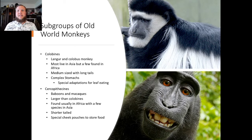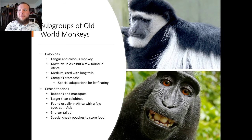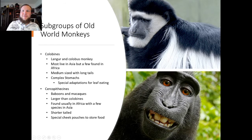Old World monkeys can be divided into colobines and cercopithecines. Colobines are the langur and colobus monkeys — mostly living in Asia, with a few in Africa. They're medium-sized with long tails and have complex stomachs, a special adaptation for leaf-eating. Cercopithecines are mostly baboons and macaques. Here's a colobus in his striking coloration, and here's a macaque — the very famous one called Naruto, the selfie monkey. Cercopithecines are usually larger than colobines, found mostly in Africa, and are shorter-tailed with special cheek pouches to store food.